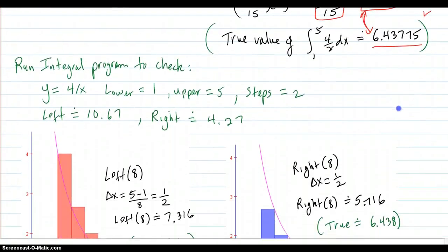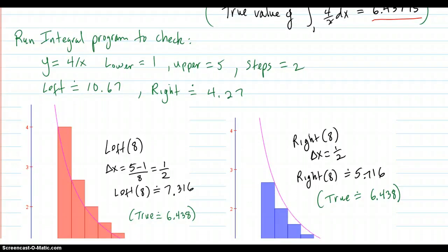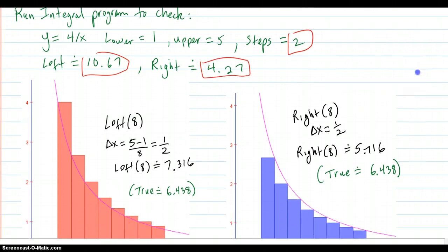So you can always run the program to check it. Run the integral program. Put the 4 over x in. Run it from 1 to 5. Two steps. N equals 2. And it gives you the values there. But you should know how to do this by hand, too, for an exam.